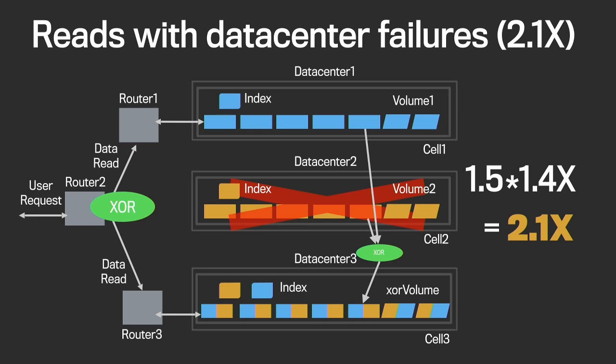After the data read phase is complete, router 2 does a XOR of the data to rebuild the photo and sends it back. What is the storage complexity of this system? Given we are doing a byte-by-byte XOR of volume 1 and volume 2 and storing it in another volume, for each two logical bytes we are storing three bytes, giving a complexity of 1.5x. Within each cell we use Reed-Solomon 10-to-4, which has an overhead of 1.4x. Overall, storage complexity becomes 1.5 × 1.4 = 2.1x. Thus we reduce the replication factor from Haystack's 3.6x to 2.1x, and we are tolerant to disk, host, rack, and data center failures.